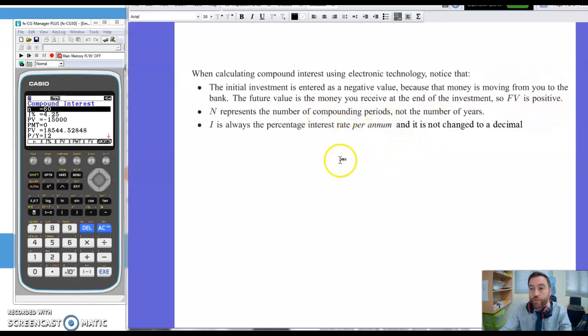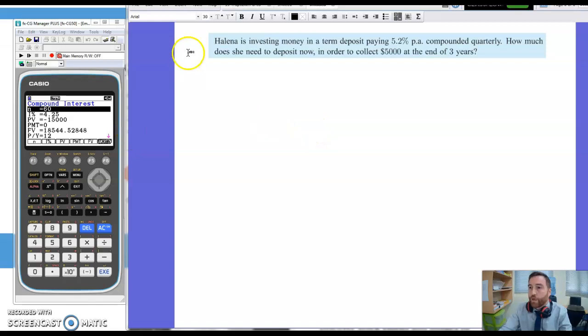And lastly, I%, we just write it as the percentage interest rate per annum. You don't have to change it to a decimal like 0.0425. We just put in the percentage rate. So if it's 25% you put in 25. Here's another example then. So we've got Helena is investing money in a term deposit paying 5.2% per annum compounded quarterly. So lots of information there. Let's just clear all this up and fill in the bits that we want to fill in.